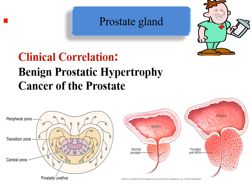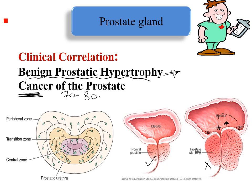With old age, two things happen. All men develop benign prostatic hyperplasia (BPH), while some males above the age of 70 to 80 may develop cancer of the prostate. BPH occurs in the central and transitional zones — the mucosal and submucosal areas — and leads to partial obstruction of the urethra.